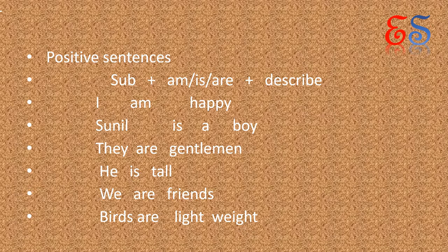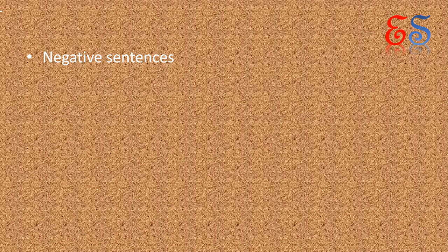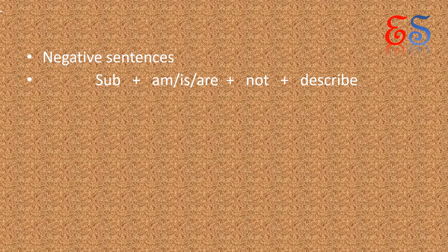These were positive sentences — ये सकारात्मक sentences थे। Now let us learn negative sentences — अब हम negative sentences याने की नकारात्मक sentences देखेंगे। Subject + am/is/are + not + description. Subject am, is, are, not और उसका वर्णन। For example: I am not at home — I subject है, I के साथ am लगता है, not याने की नहीं, और at home वर्णन है।